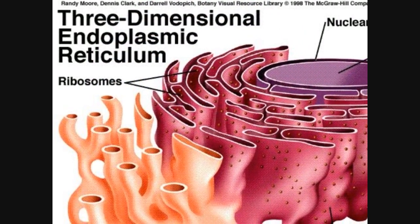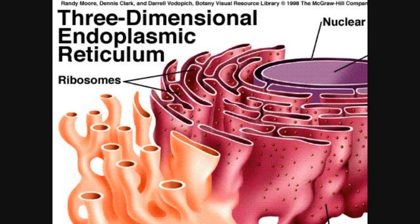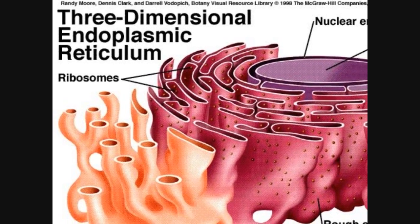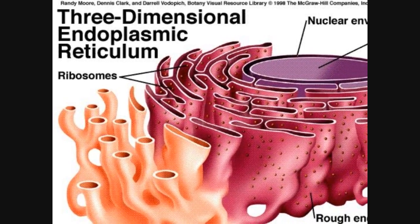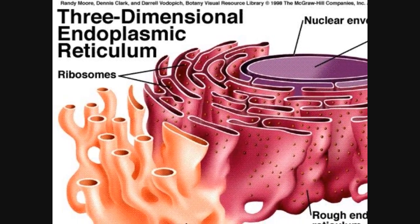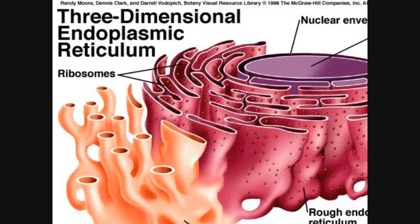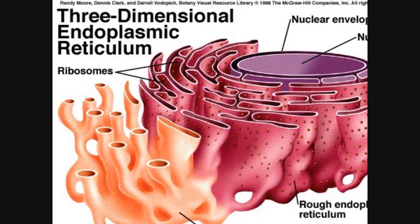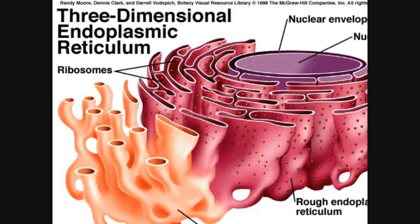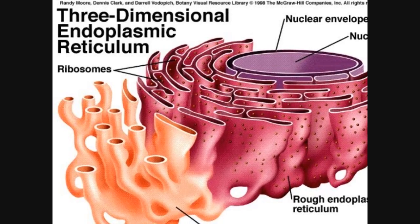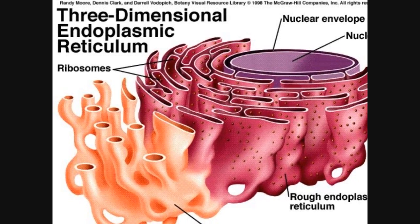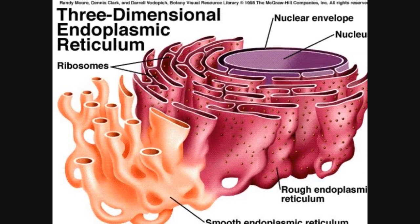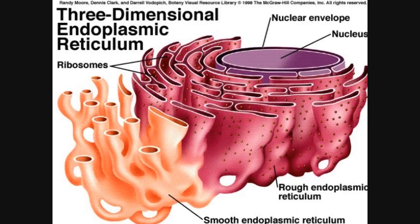The endoplasmic reticulum is an extension of the nuclear membrane. The regions with ribosomes are called the rough ER, and their function is to transfer ribosomes. The regions without ribosomes are called the smooth ER, and their job is to synthesize lipids.